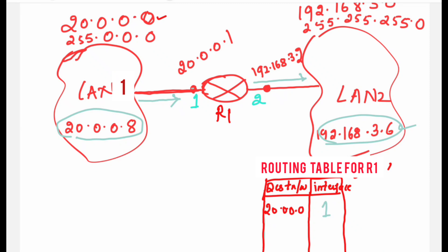When the router receives a packet with destination address 192.168.3.6, it refers to its routing table, sees that 192.168.3.6 belongs to the 192.168.3.0 network, and the interface is 2. So it places the packet on interface 2 and the packet goes to that network, eventually reaching the destination host.